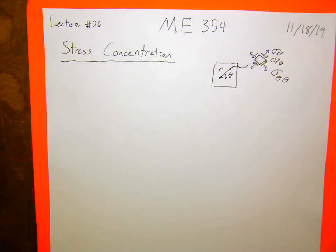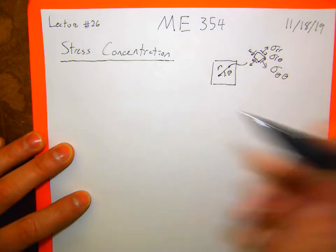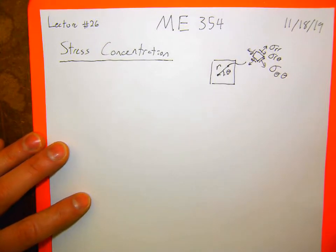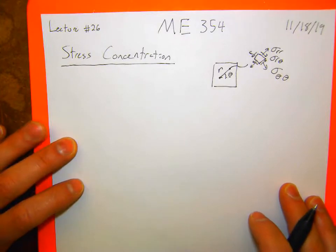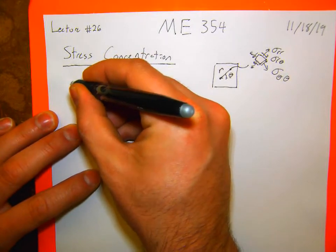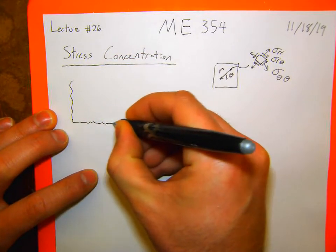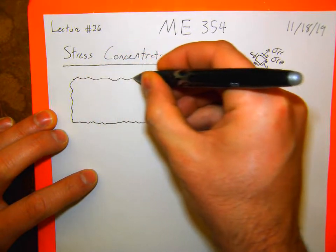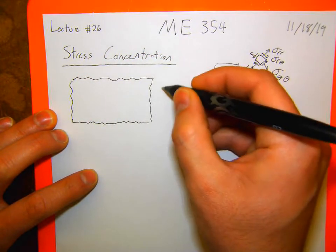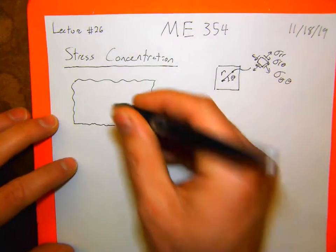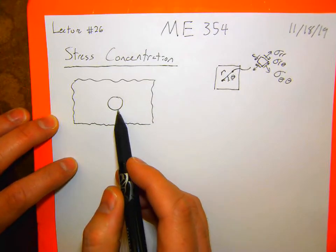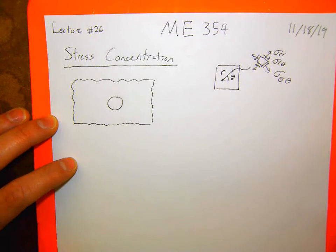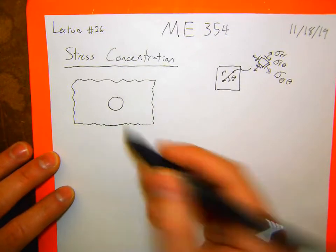I gave transformation equations from Cartesian to cylindrical polar last week. There's also spherical polar, but we won't have to worry about that. So the question is: if I have a circular hole in a semi-infinite plate — this thing goes off much bigger than what I'm drawing, I'm just zooming in on the hole — say this would be like a hole punch inside a sheet of paper.